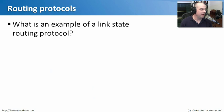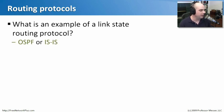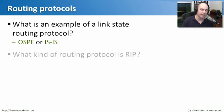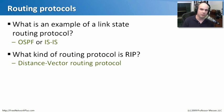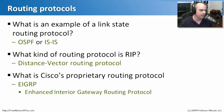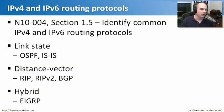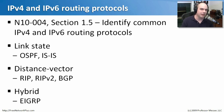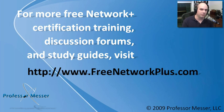Let's review what we've learned. What is an example of a link state routing protocol? There were two in this module: OSPF and ISIS. What kind of routing protocol is RIP? Both RIP and RIPv2 are distance vector routing protocols. Cisco has a proprietary routing protocol used in their routing devices — that's EIGRP, the Enhanced Interior Gateway Routing Protocol. Hopefully that gives you a good idea of what you need to know for the routing protocol section of the Network Plus certification, covering link state, distance vector, and hybrid protocols. Visit freenetworkplus.com for more videos and message boards.